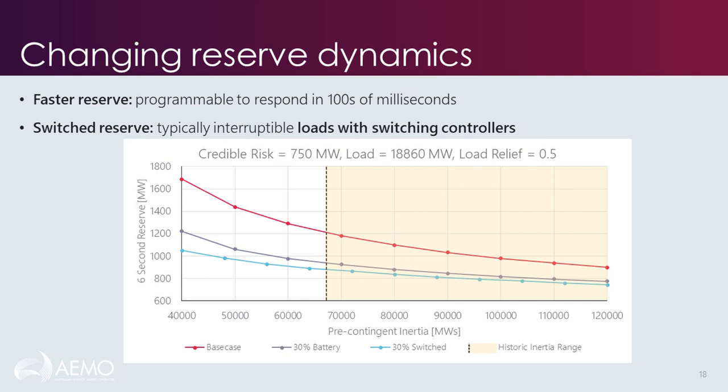This is good news — there are opportunities from the changing reserve dynamics on the system. However, these reserve products respond differently to typical thermal units, and having them as part of the mix can increase the complexity of operation. As the proportion of faster reserve increases significantly, how they are managed and integrated needs to be considered very carefully. Section B4.7 of the appendix report has more detail on this.